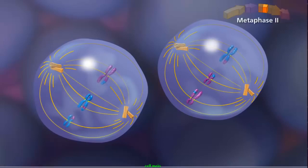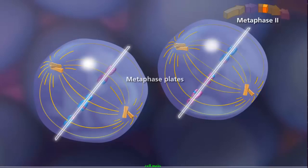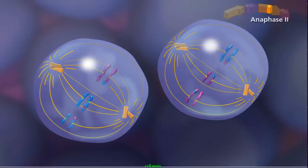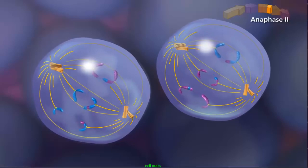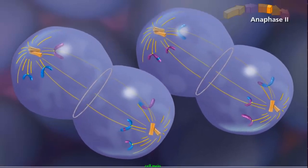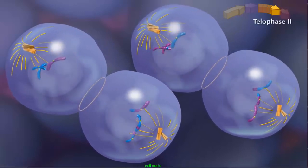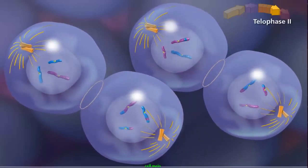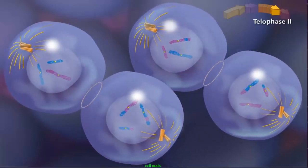The spindle aligns the sister chromatids along the metaphase plate during metaphase II. During anaphase II, sister chromatids separate and individual chromosomes move toward the poles.